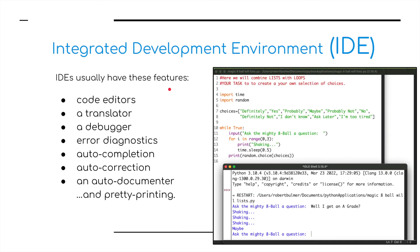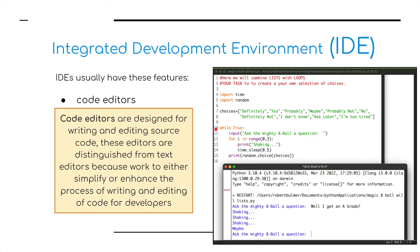So what features usually come with an IDE? We have a code editor, a translator, a debugger, error diagnostics, auto-completion, auto-correction, an auto-documenter, and finally, pretty printing. Code editors are designed for writing and editing source code. They're distinguished from text editors because they simplify or enhance the process of writing and editing code. As you can see, it's nicely readable and formatted — with different colors to identify strings, variables, functions, and so on.